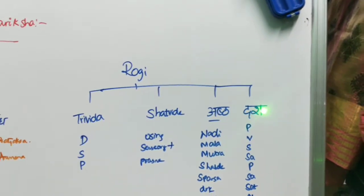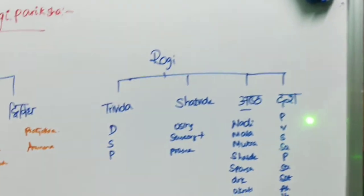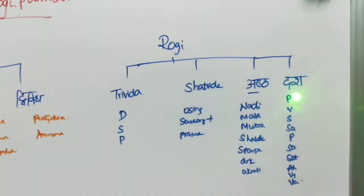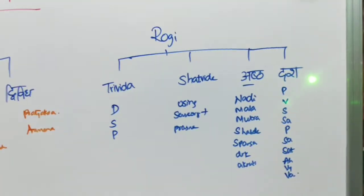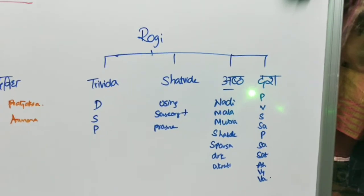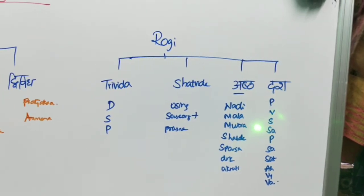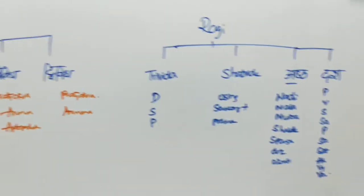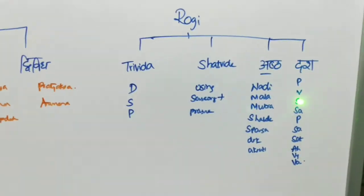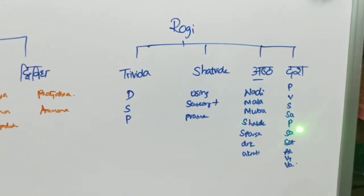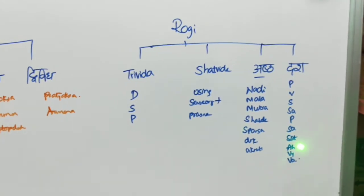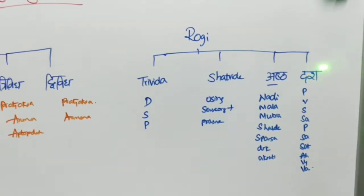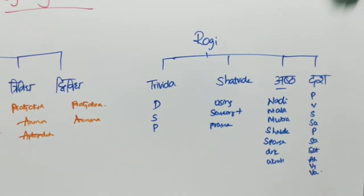Coming to Dashavida Pariksha — the reference is Charaka Vimanasthana. The ten parameters are: Prakriti, Vikriti, Sara, Samhanana, Pramana, Satmya, Sattva, Ahara Shakti, Vyayama Shakti, and Vyayas. All these come under Dashavida Pariksha.